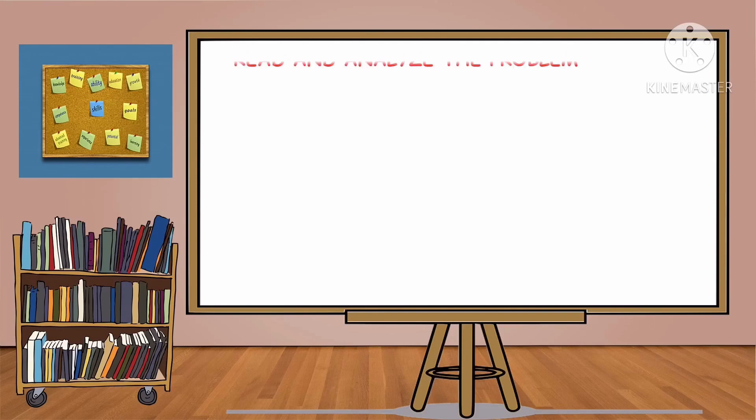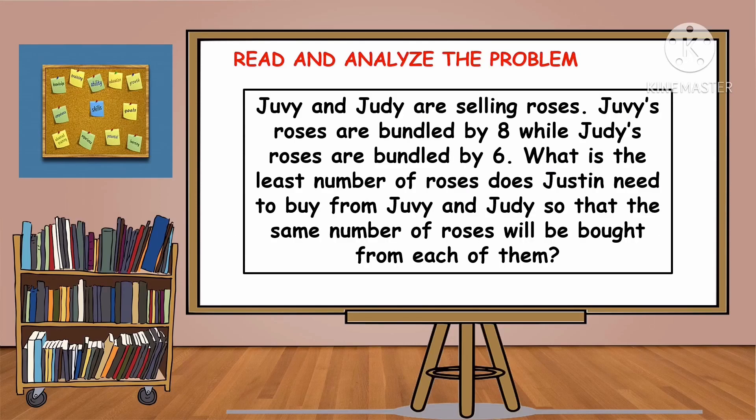Let us read and analyze the problem. Juvie and Judy are selling roses. Juvie's roses are bundled by 8 while Judy's roses are bundled by 6. What is the least number of roses does Justin need to buy from Juvie and Judy so that the same number of roses will be bought from each of them? Let's find the answer and solve this problem using the four-step rule.